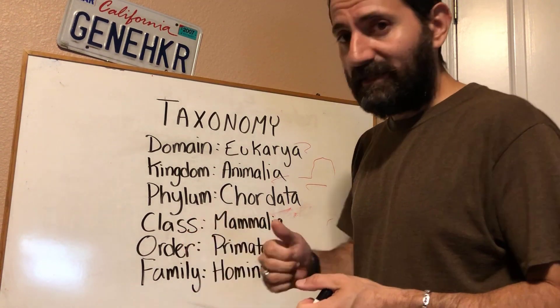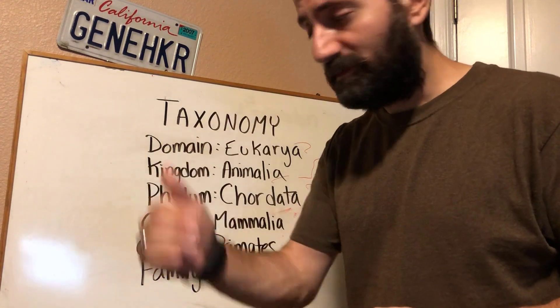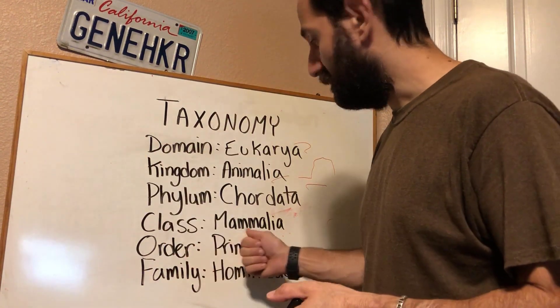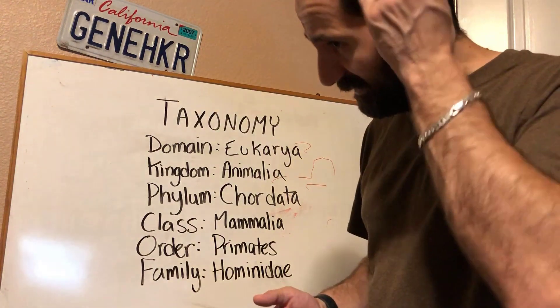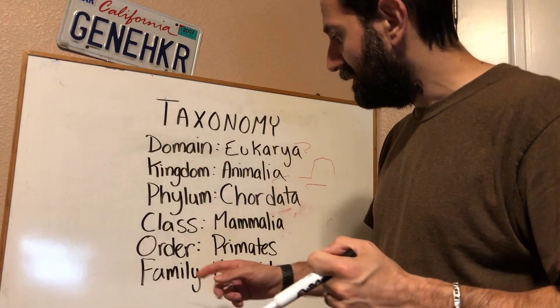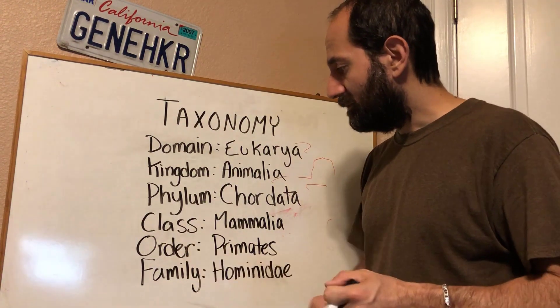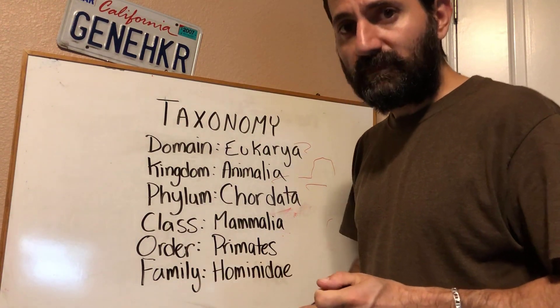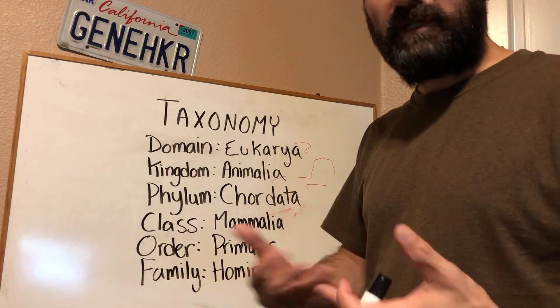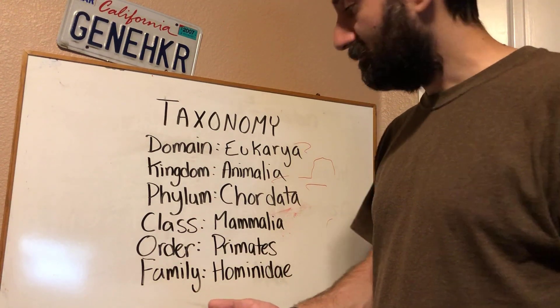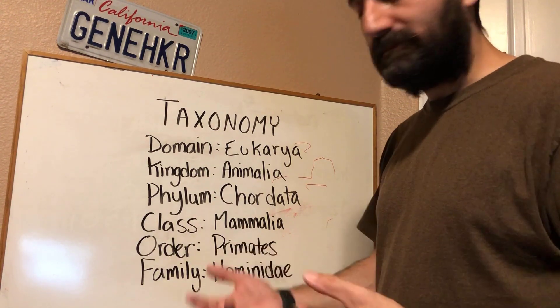And then we have the class. Now we're getting more specific — class. We're mammals; obviously we are mammals, we've got hair and everything. And then we've got order. Order is primates. We are primates, like the apes.